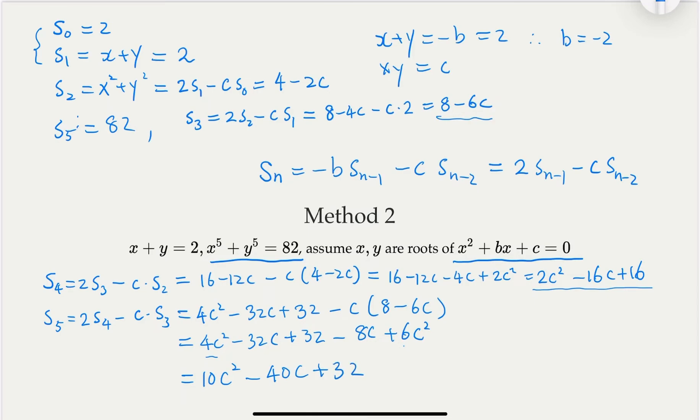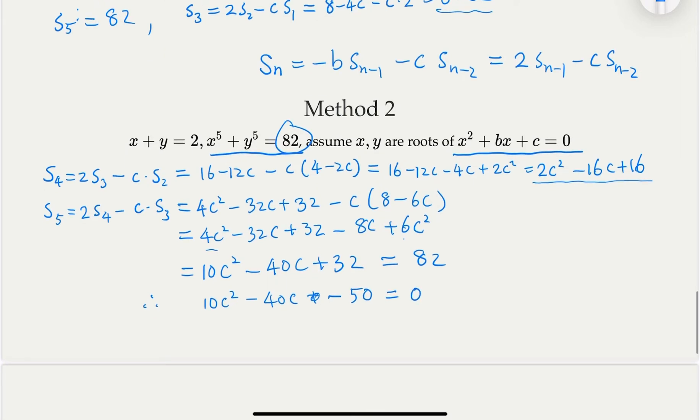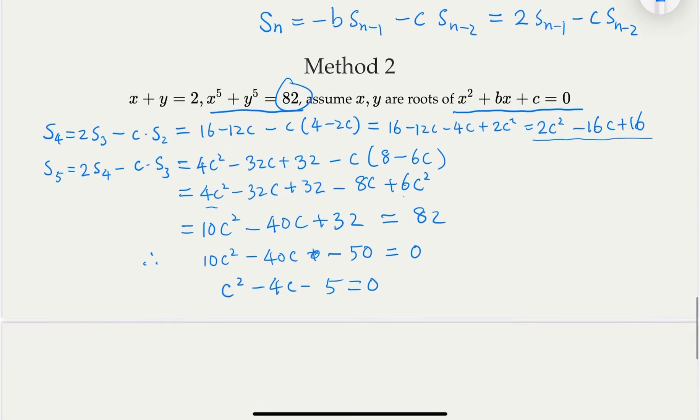But we know that s_5 equal to what? Equal 82. We're given that. So what you get is an equation here is 10c squared minus 40c plus 32 minus 82. That would be negative 50 equal to 0. And then notice that you have common factor of 10. Let's get rid of it. It becomes c squared minus 4c minus 5 equal to 0.